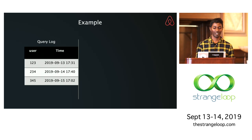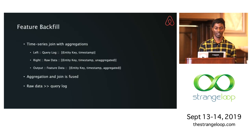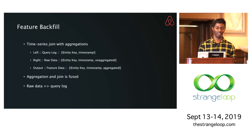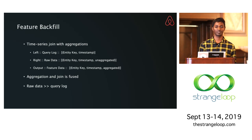Concretely, you have a log of queries — a user and a time at which you want to predict certain attributes — and you have features that are aggregates needing to be joined together with the time property, such that the features are not too stale and not from the future. This is the temporal, or time series, join we're talking about. The left side is the query log, the right side is raw data, and the output is the joined result. With the aggregation properties we discussed, you can do all of this in a single pass — fusing the join and aggregation together. Raw data can be much, much larger than the query log; you'd never train over billions of events, but raw data can go up to trillions.